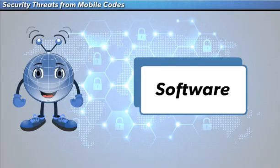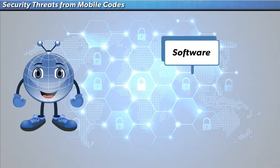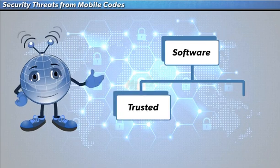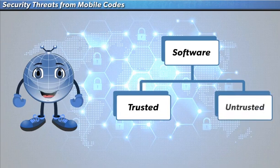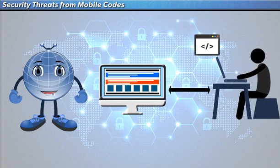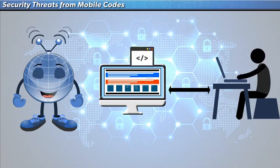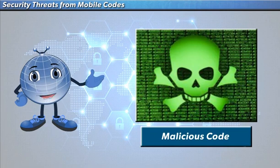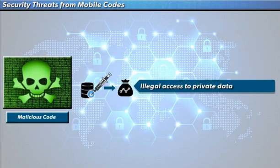Security threats from mobile codes. Basically, software is classified into two types with regards to security: trusted software that comes from a trusted resource, and untrusted software that is not from any trusted resource. Security threats appear if the mobile code generated by a malicious outsider attacks the environment where it is executed.